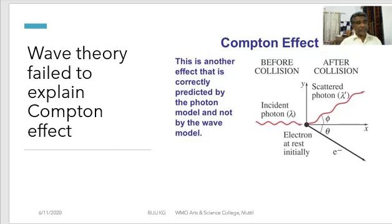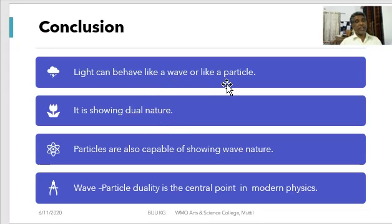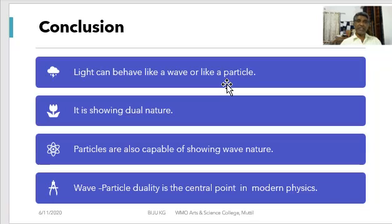That means light can behave like a wave or like a particle depending on the situation — in certain situations it behaves like a particle, and in others like a wave. Light is showing dual nature. Similarly, electrons, generally considered as particles in classical physics, also show wave properties in certain situations. This wave-particle duality is a central point in modern physics, and is the starting point for the new branch called quantum mechanics.